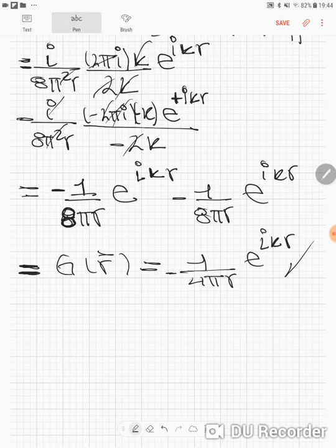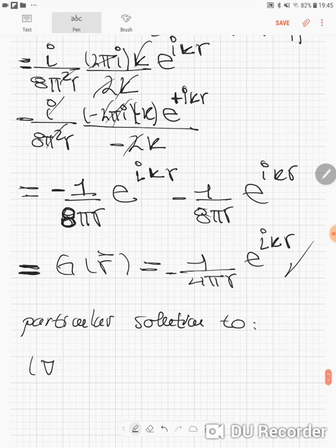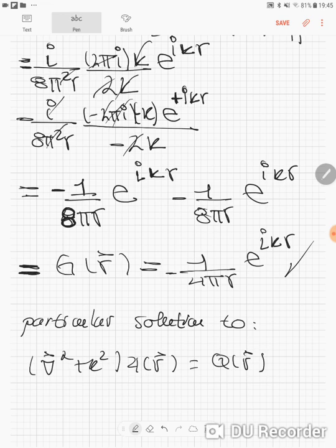Once we have calculated the Green's function of the particular solution to our original equation, the Schrödinger equation in Helmholtz form given by Laplacian by kappa squared times the wave function equals Q of R.